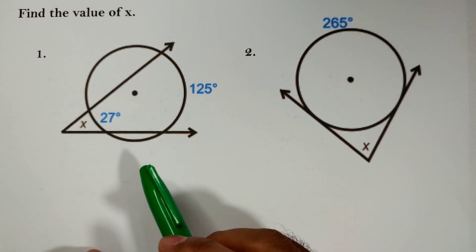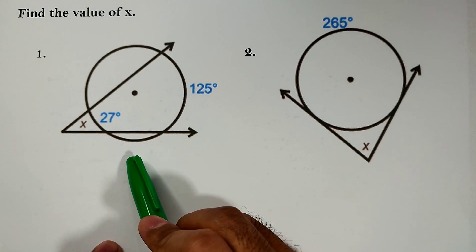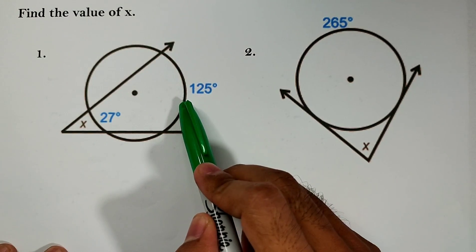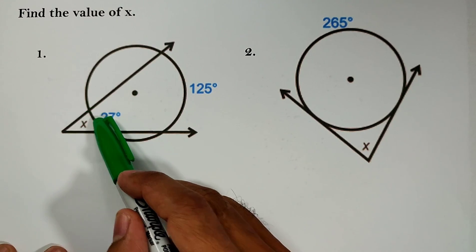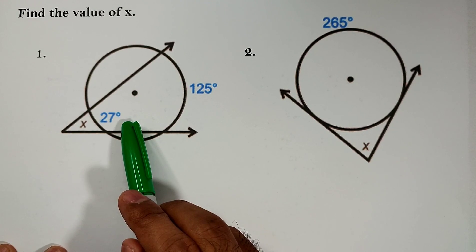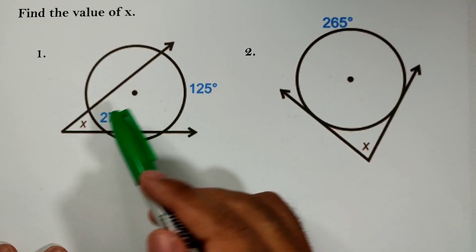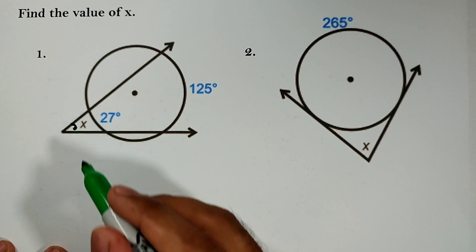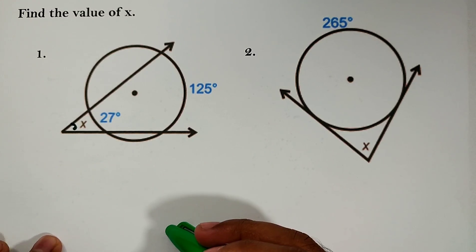Let us look at the examples. We have item number 1 and item number 2. For item number 1, find the value of X. The given measures are 125 degrees for one intercepted arc and 27 degrees for the smaller intercepted arc. We are looking for the measure of the angle formed outside of the circle, which is X.